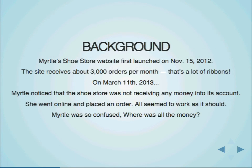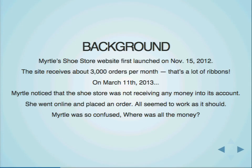Myrtle's shoe store was first launched on November 15, 2012. The site received around 3,000 orders per month — that's a lot of ribbons. And on March 11, 2013, Myrtle noticed that the shoe store wasn't receiving any money into its account. She went online and placed an order, and everything seemed to work like it should. Myrtle was very confused. What was happening to the money?